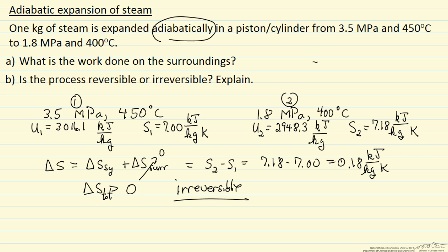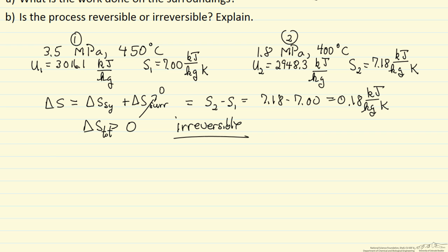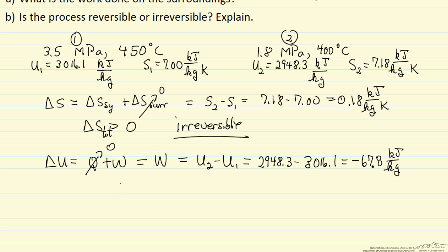Now for the answer to the first part, we apply the first law. The first law for a closed system with no mass transfer is Q plus W. It is adiabatic, so Q is zero, and so the work is just delta U, which is U2 minus U1. Substituting in these values and calculating to two significant figures, this should be approximately negative 68 kilojoules per kilogram. We have one kilogram, so that is the total work.